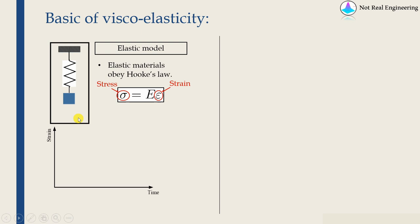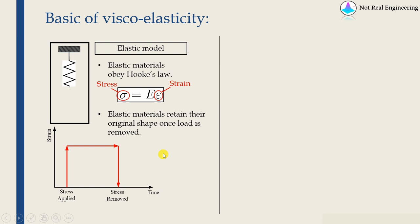What this means is, if we apply a load on elastic material, then as we apply a load there will be some instantaneous deformation. As long as we keep that applied load, the deformation will be constant. And when we remove that load, all of the deformation will be recovered back. Which means elastic materials retain their original shape once load is removed.